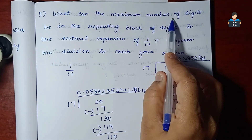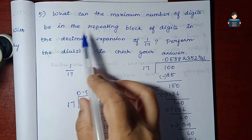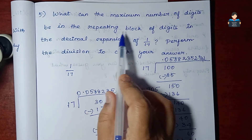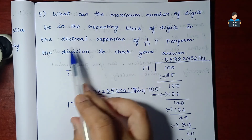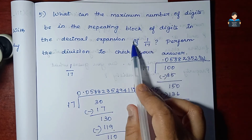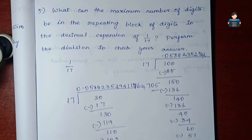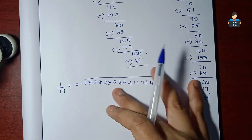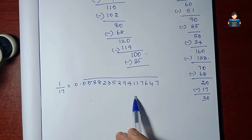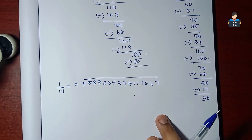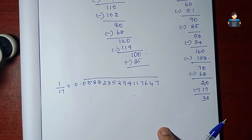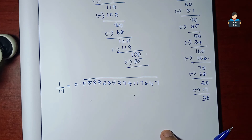This is the maximum number of digits in the repeating block of digits in the decimal expansion of 1 by 17. The answer has 16 digits in the repeating block. So this video is complete. The next video covers the 6th sum.